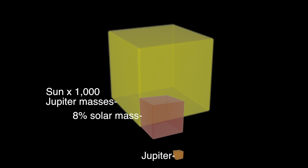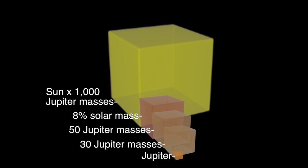Beletsky's team, led by Henri Boffin of the European Southern Observatory, found that both objects have a mass between 30 and 50 Jupiter masses.